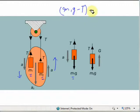Similarly, net upward force acting on mass m2 is T minus m2g, and this will be equal to m2 times a.